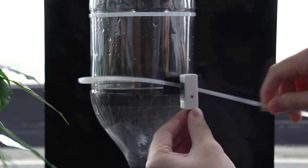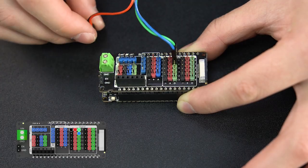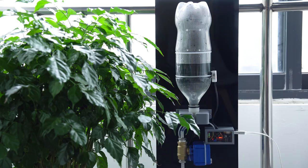Now install the liquid level sensor outside the water tank and connect it to a controller. Let's see how it works.